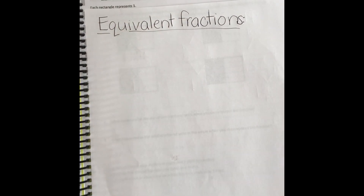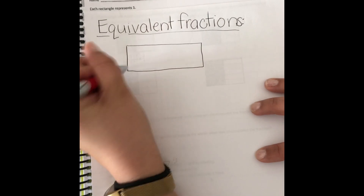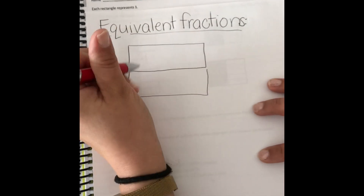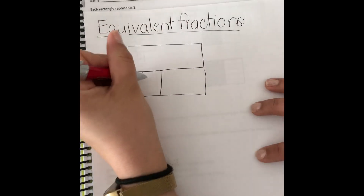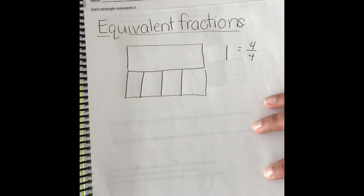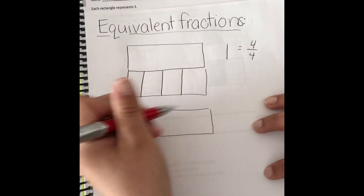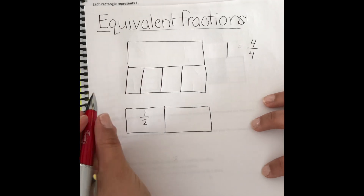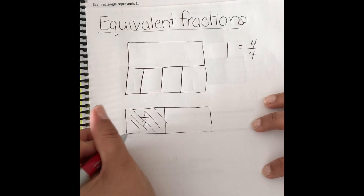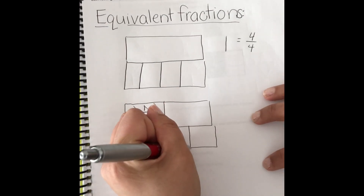An equivalent fraction is two different fractions. They have different numerators and different denominators, but they are worth the same value. For example, one whole is equivalent to four-fourths. They're equivalent — they're worth the same amount. We also know that one-half is equivalent to two-fourths. It's worth the same amount.